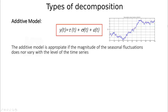There are different types of decomposition methods. The simplest is called the additive model, where the function we are trying to predict is simply the sum of the trend cycle, the seasonality, and the noise. This applies in cases where the variability of the noise is roughly constant everywhere — the fluctuations are almost the same throughout the series.